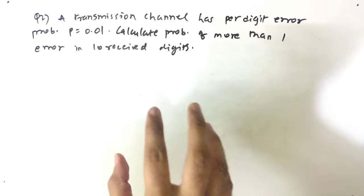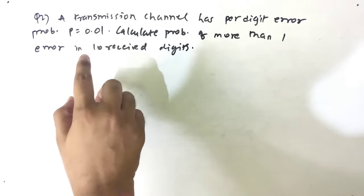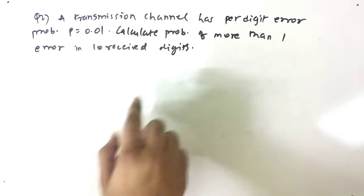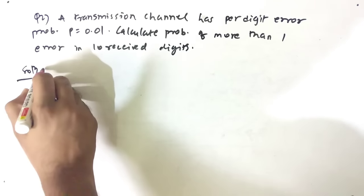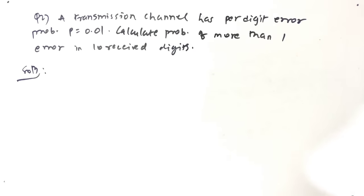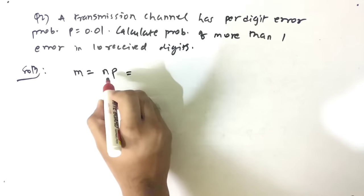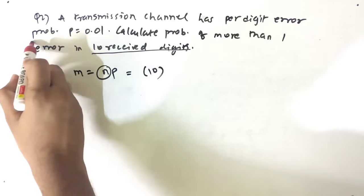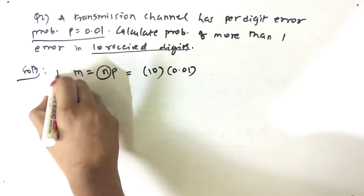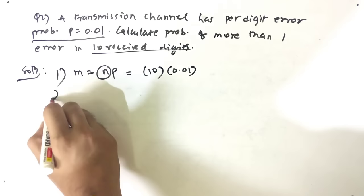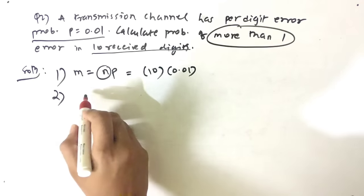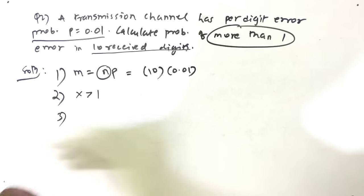Our second question: a transmission channel has a per-digit error probability p = 0.01. Calculate the probability of more than one error in 10 received digits. Here, average is not given, so m = n × p. n is 10 received digits, and p is 0.01, giving m = 10 × 0.01 = 0.1. x is clearly 'more than one,' so x > 1.